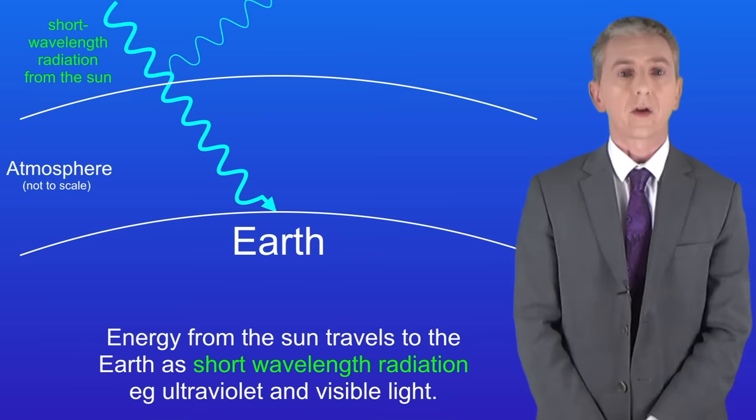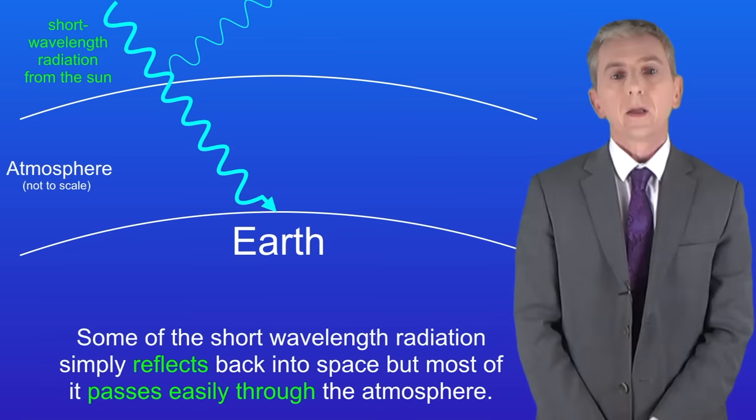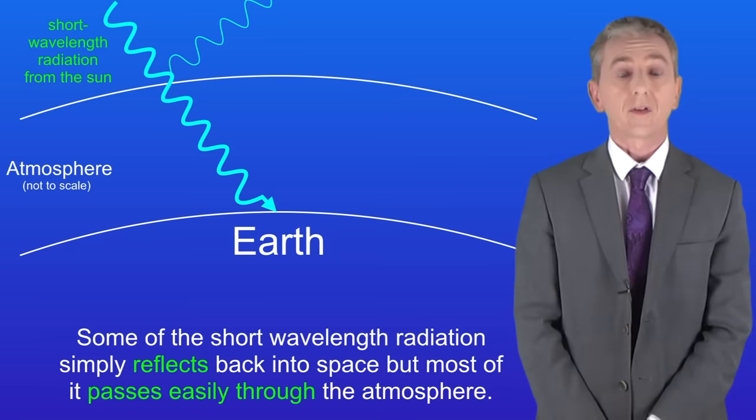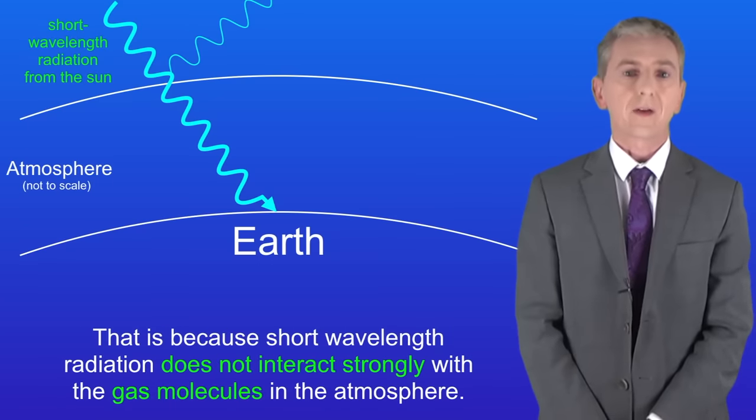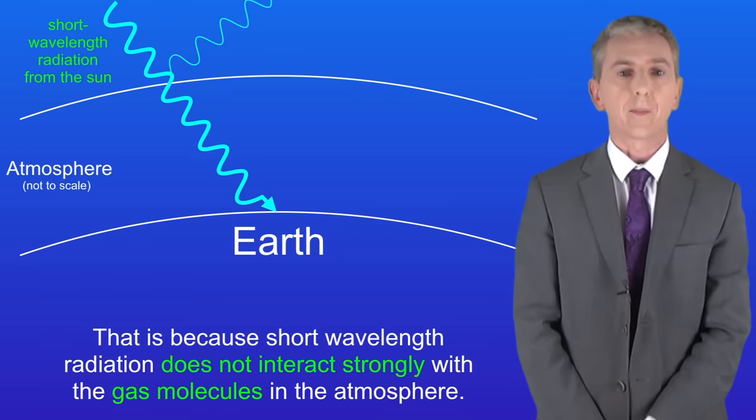Energy from the sun travels to the earth as short wavelength radiation, for example ultraviolet and visible light. Some of the short wavelength radiation simply reflects back into space but most of it passes easily through the atmosphere. That's because short wavelength radiation does not interact strongly with the gas molecules in the atmosphere.